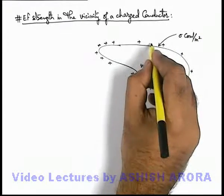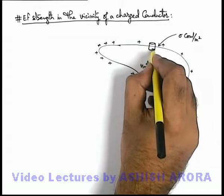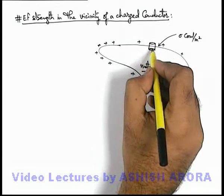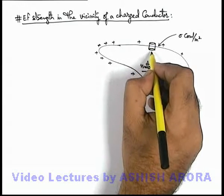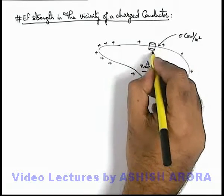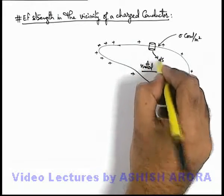In this situation let's consider a very small cylindrical surface of which a part is outside the metal surface and a part is inside the metal body, and the circular surface area of this cylinder is say d-s.